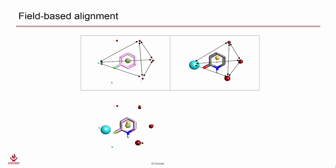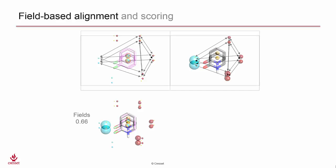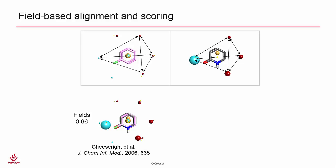In scoring the alignment, we use a combination of field and shape-based similarity. We see for molecules here that we have a reasonable field similarity of 0.66. Looking at the shape similarity, we have a score of 0.98.